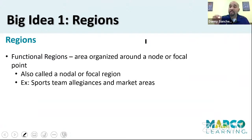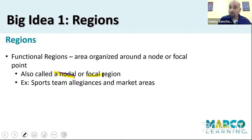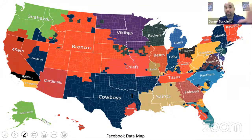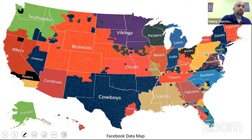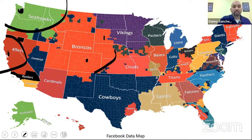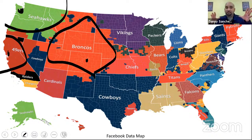We go to the next type of region, which is a functional region — an area organized around a node or focal point. Hence the terms nodal or focal region. Three names for the same thing: functional region, nodal region, focal region. In the perfect world, the functional region will be a circle with a dot in the middle. NFL fan zones — this is Facebook data compiled to show where fans of certain teams live. The Seahawks play in Seattle and the Pacific Northwest roots for them. The 49ers are in San Francisco and Northern California roots for them. The Broncos are in Denver and this whole area roots for the Broncos. That's the functional region — not always perfect circles, but there's a node and the area that extends out from around it.